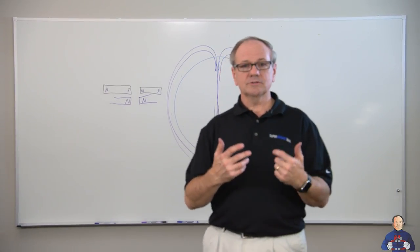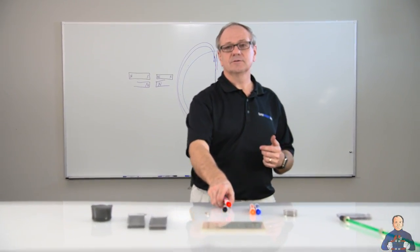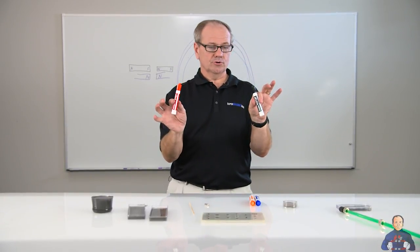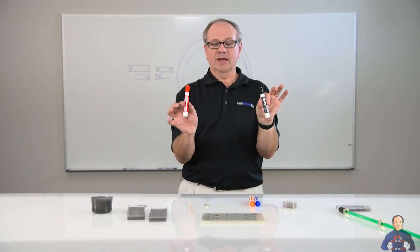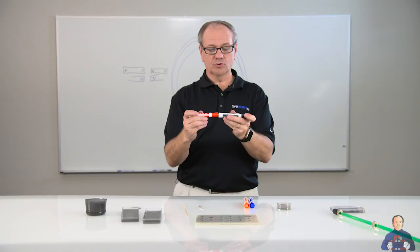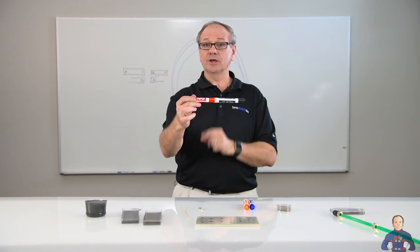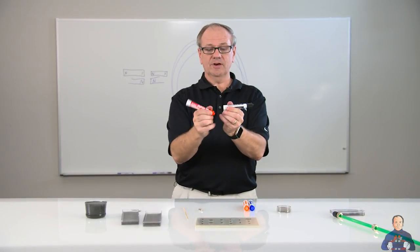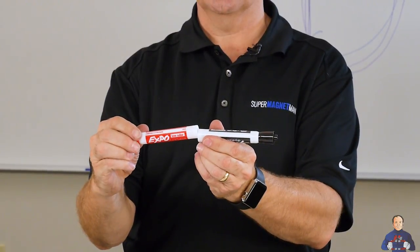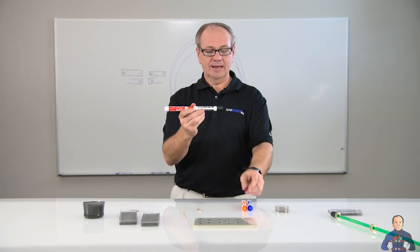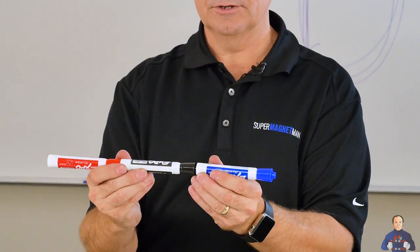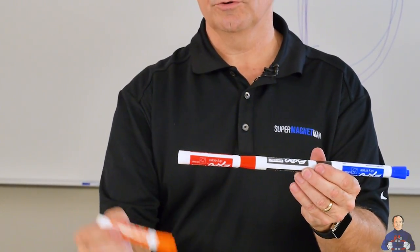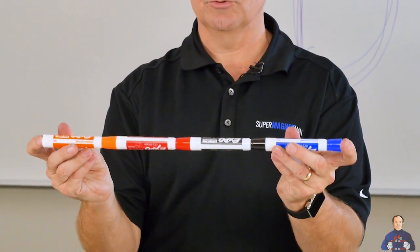So we're going to take a look at these markers. These are just regular dry erase markers. And what we notice with our dry erase markers is they stick together in only one direction. If I turn it around like this, it doesn't stick together. It sticks together like this. And if I put another one on the end, it sticks. And if I put another one on this end, it just keeps on sticking. This is what the iron powder does.